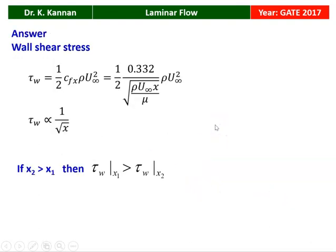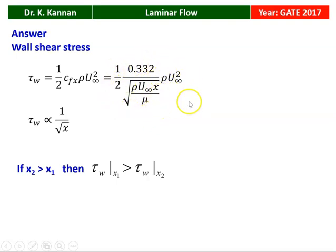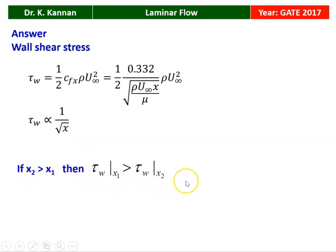We will see how in the next slide. Wall shear stress tau_w is given by (1/2) C_fx ρ U_∞². C_fx is the friction coefficient. Substituting for the friction coefficient: (1/2)(0.332 / √(ρ U_∞ / μ)) × ρ U_∞². Considering all other values as constant except X, we simplify: tau_w is proportional to 1/√X. So as X increases, wall shear stress decreases. Therefore, if X2 > X1, then tau_w(X1) > tau_w(X2). That is the answer.